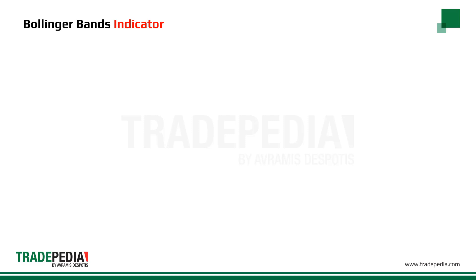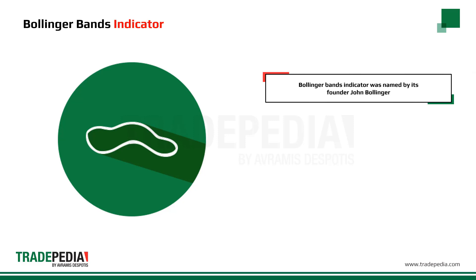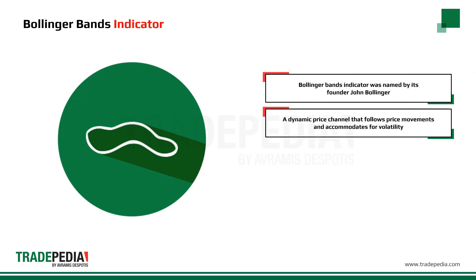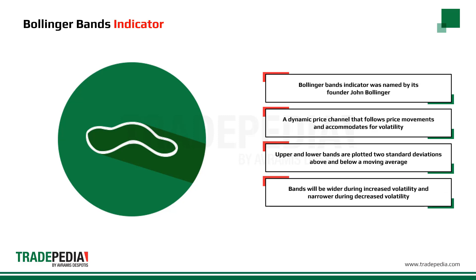Another volatility indicator is the Bollinger Bands. This volatility indicator was named after its founder, John Bollinger. He wanted to create a dynamic price channel that follows price movements and accommodates for volatility at the same time. This indicator is made of three bands, where the upper and lower bands are plotted two standard deviations above and below a moving average. Because standard deviation measures volatility, bands will be wider during increased volatility and narrower during decreased volatility.